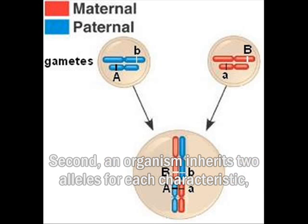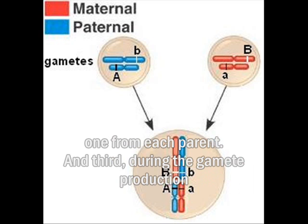Second, an organism inherits two alleles for each characteristic, one from each parent.